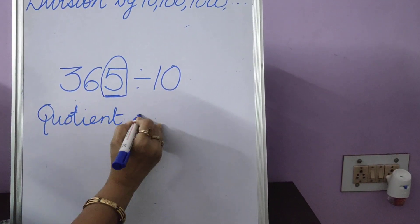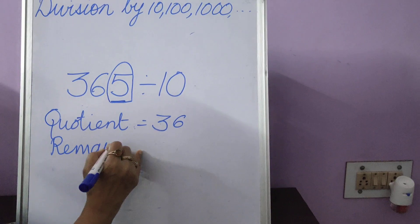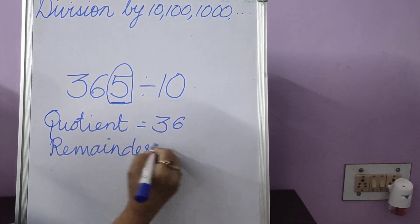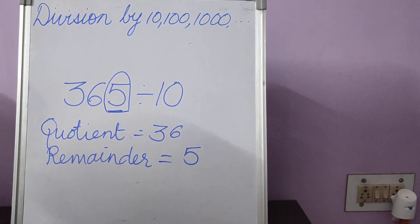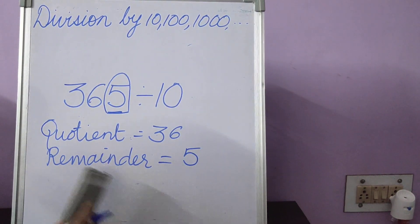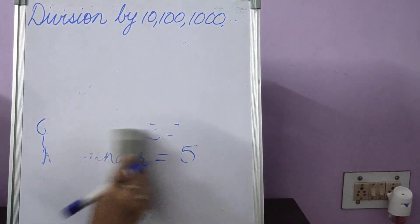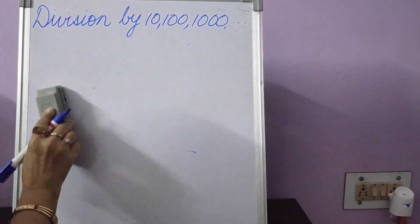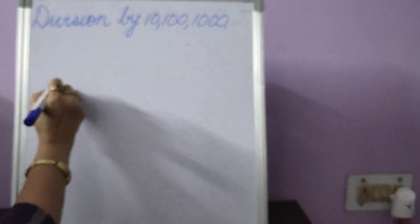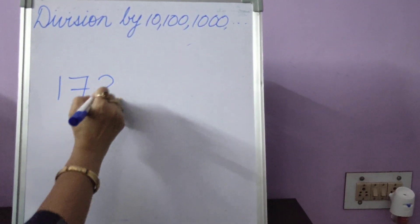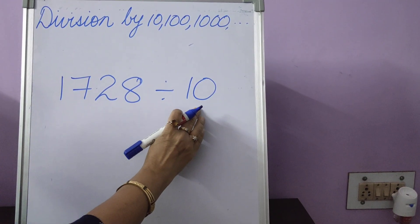So your quotient is 36, remainder is 5. Isn't it a very short method of doing this division? Now let us actually take another sum where I am not going to do much of all these detailed explanations. Suppose your next sum is 1728 divided by 10. One zero.